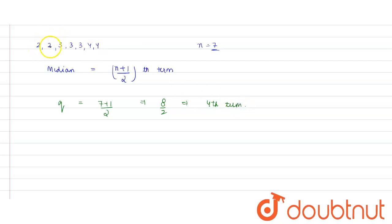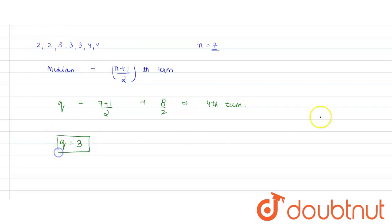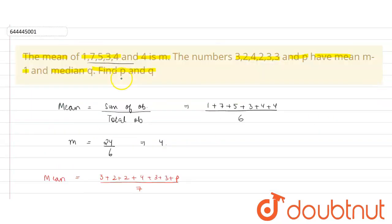The 4th term is 3, so the value of q is 3. Therefore, p is 4 and q is 3.